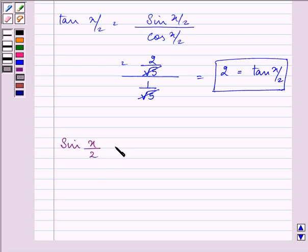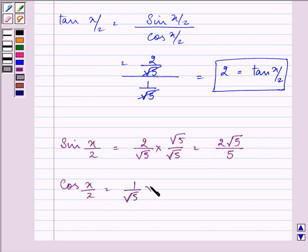In order to rationalize the denominators, after doing so, we have the value of sin x/2 as 2 by root 5, which after rationalizing gives us 2 root 5 by 5. Cos x/2 is 1 by root 5, which after rationalizing gives us root 5 by 5. And tan x/2 equals 2.